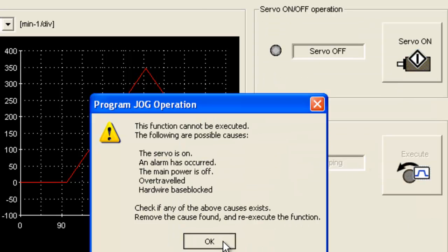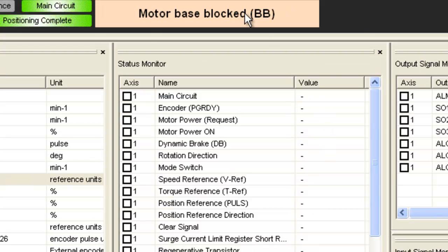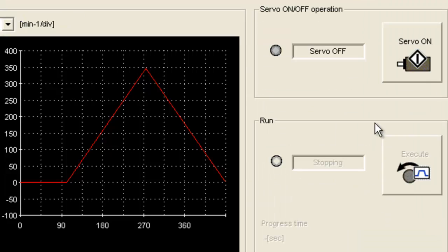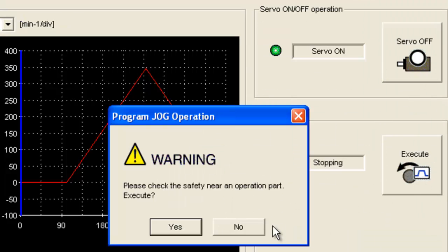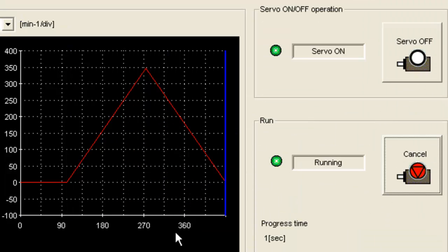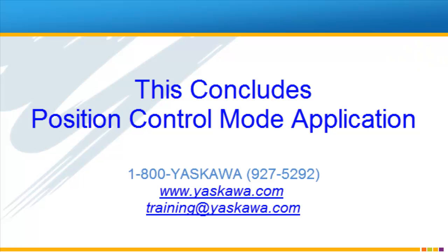Servo on. And I still have my over travels on. Put the over travels back on. Program jog. And run. We're going to move. And take my word for it, it moved. And it moved one revolution. So that's it. A position control mode application using the wizard and Sigma Win Plus.